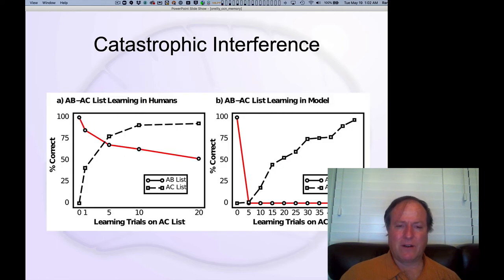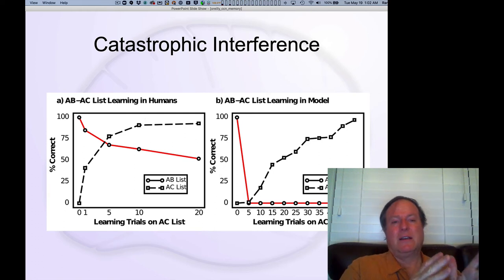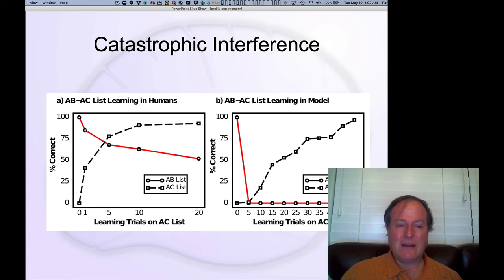If you focus on the left panel here and ignore the catastrophic word in the title, what you see in people is that as you start to learn items on the A-C list — as this curve is going up — you see a systematic amount of interference on items in the A-B list. When you finished learning A-B and started learning A-C — it's critical that you do all A-B learning first, then A-C, giving you blocked learning — you had perfect memory on A-B, and that gets interfered with pretty substantially. You're down to maybe 50% by the time you've had a number of trials on the A-C items and gotten to near perfect on those. So people do suffer from interference.